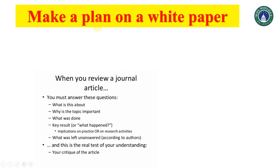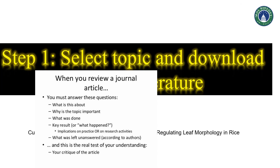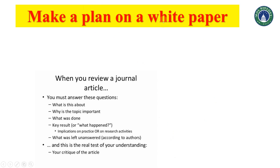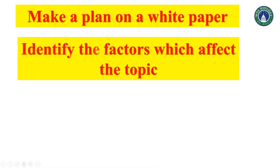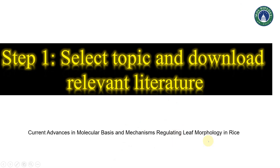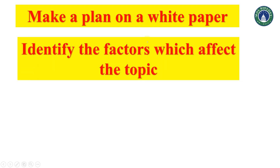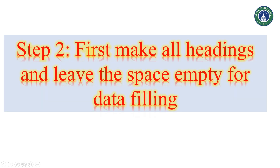The next step is to make a plan on paper — what you want to do and how you want to do it. Once you're clear on the topic, the next step is to identify the factors which affect the topic. For example, for the topic of leaf morphology, you need to identify what factors can affect leaf morphology. Then make all the headings based on those factors.